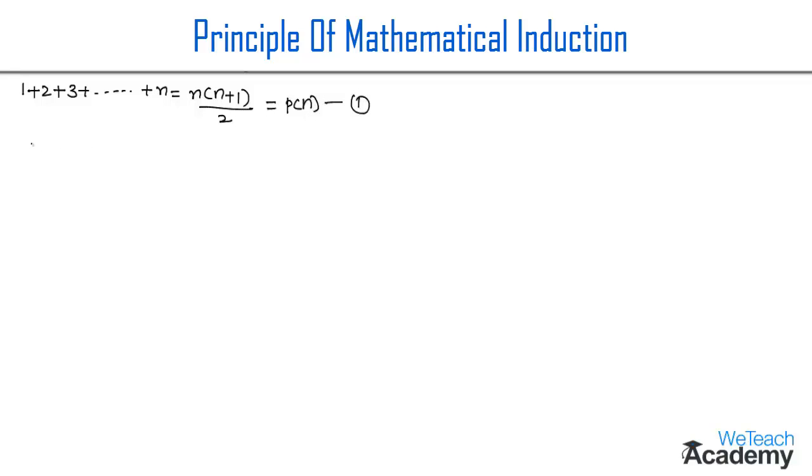First, we have to prove that P(1) is true. For that, we have to substitute n equals 1 in equation 1. By substituting n equals 1, we get 1 equals 1 into 1 plus 1 divided by 2.